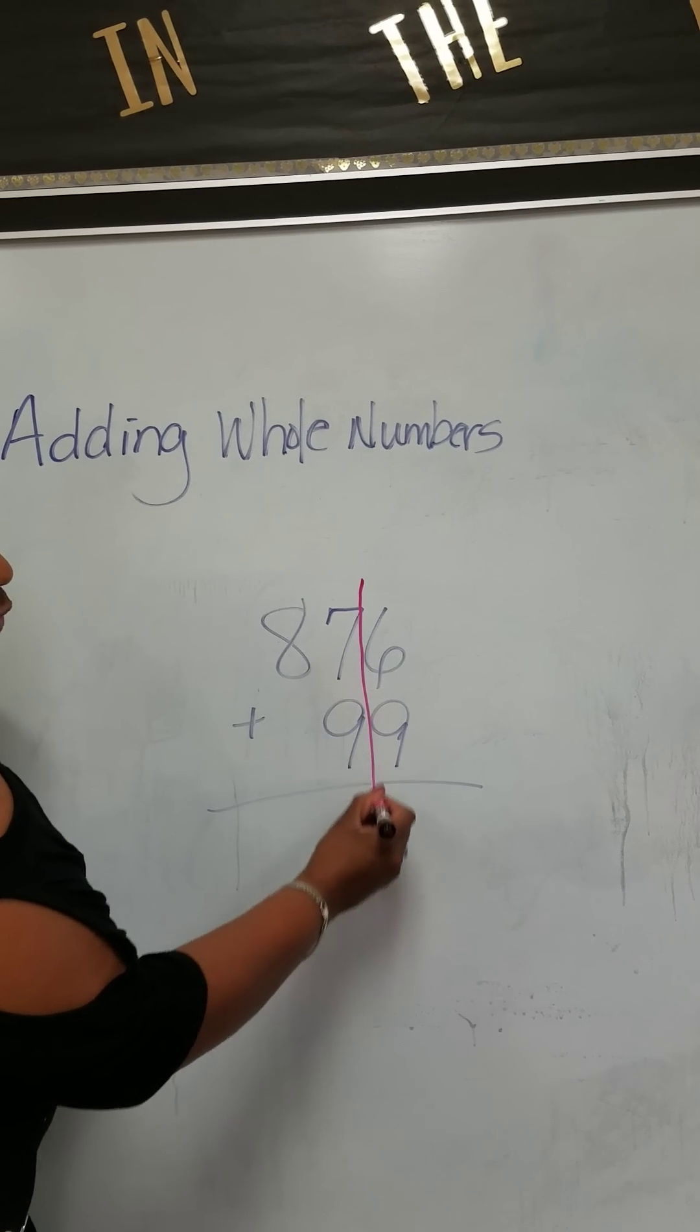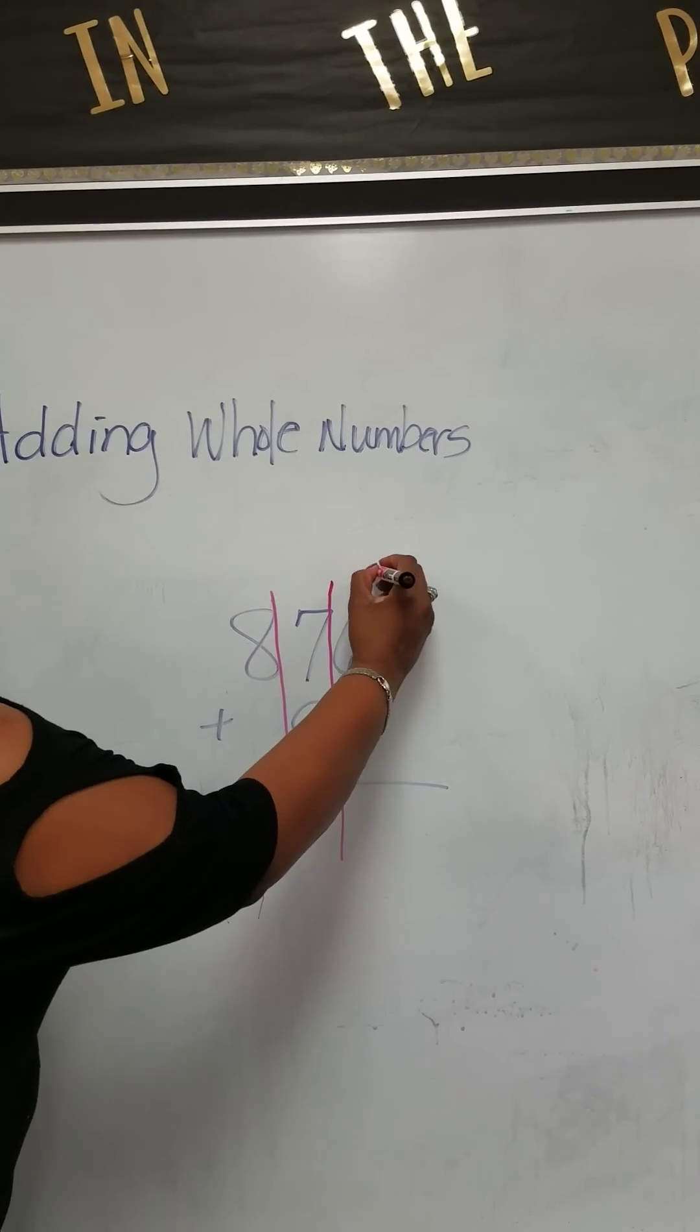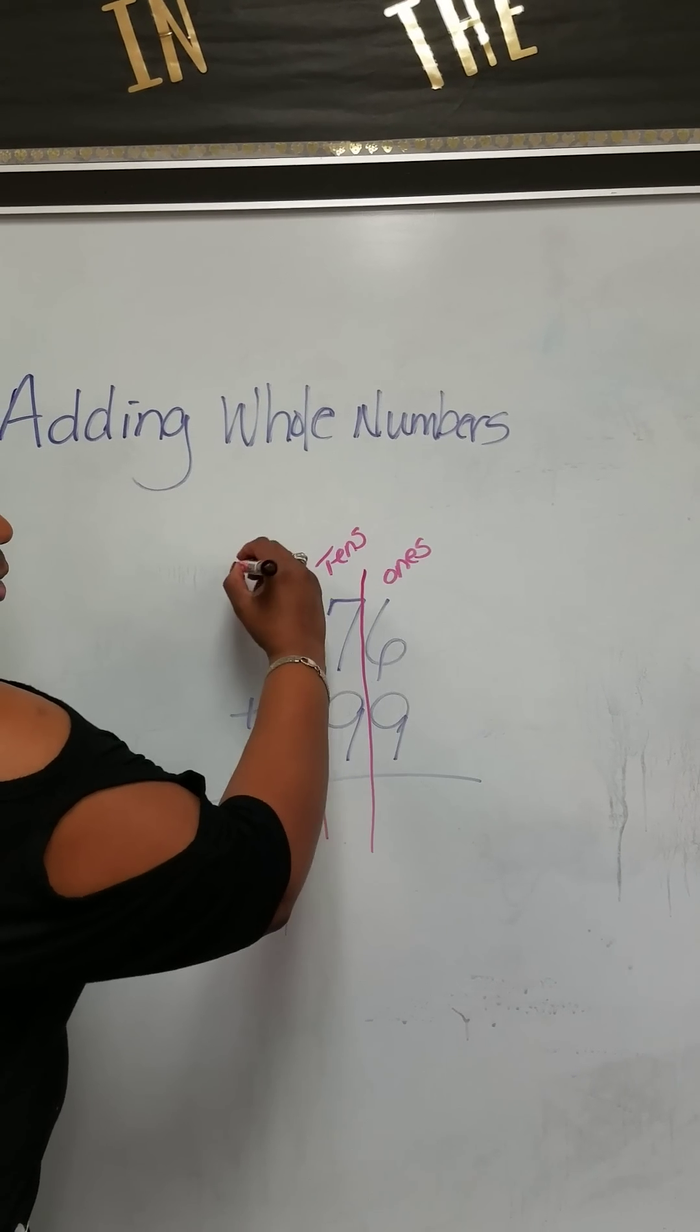So we're going to put columns between here. This will be the ones column, tens, hundreds.